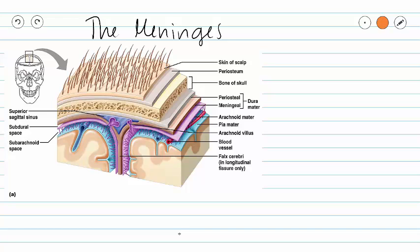This video will begin a series of videos on the brain, and this video in particular will be covering the meninges of the brain. We have three meninges protecting our brain and spinal cord. The first and most superficial of these layers is our dura mater, the middle layer is our arachnoid mater, and the deepest layer is our pia mater.